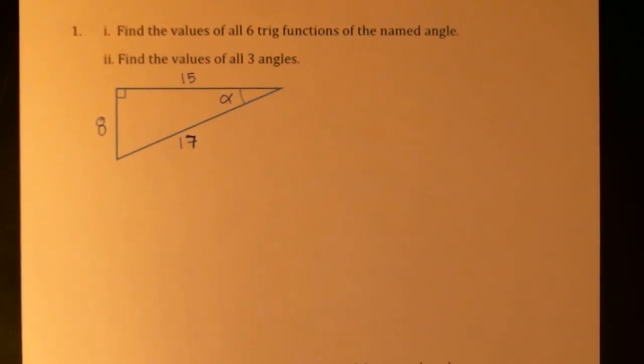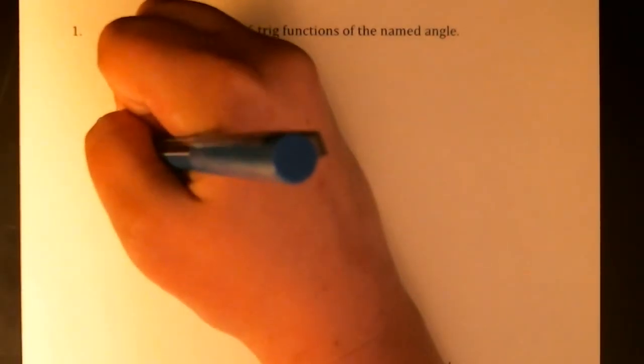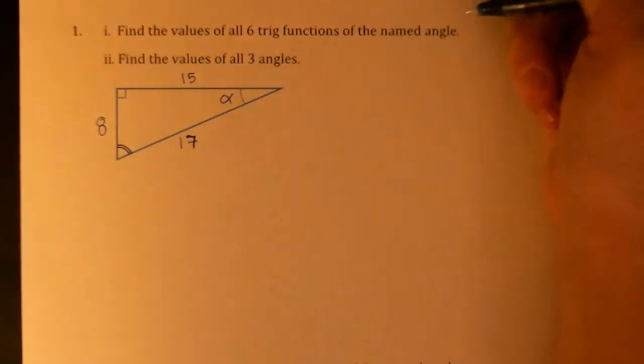So the first thing we need to do is find the values of all six trig functions of the named angle. There is a different angle down here that we could use and we would get different answers.